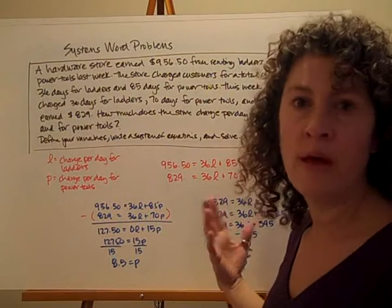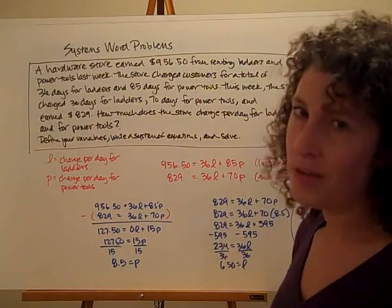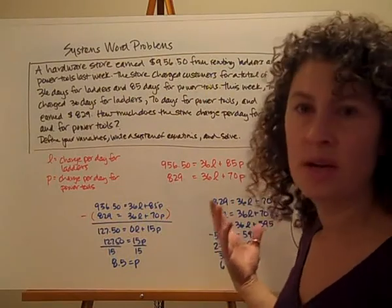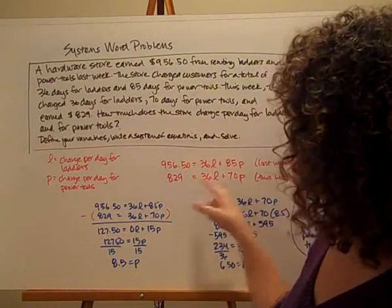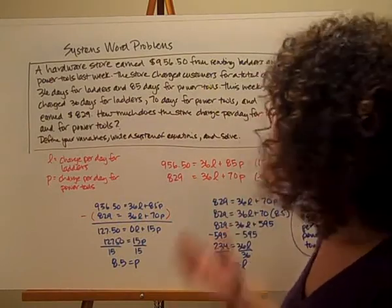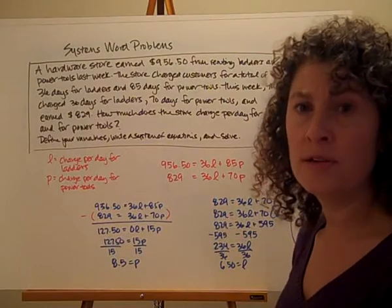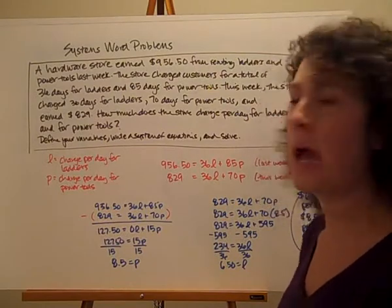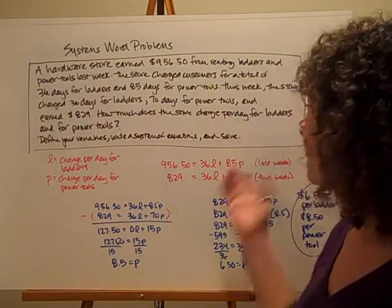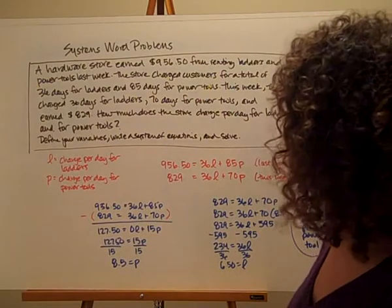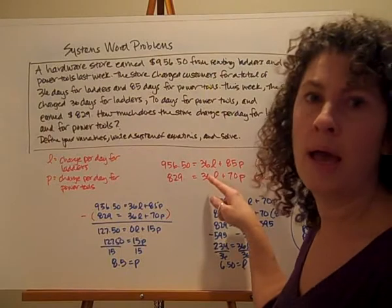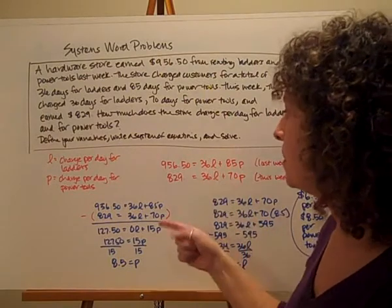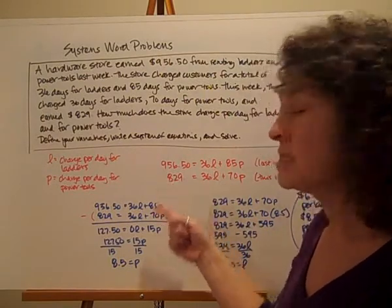Now I'm going to figure out which method works best. Graphing is probably not the greatest here because I could end up with decimals. As I look at solving for one of the variables, neither one of these is really friendly. Could I do it? Absolutely. But I don't really want to. Let's take a look at our variables. And then I noticed that both of my L's have coefficients that are the same. So I'm going to set this up as subtraction.